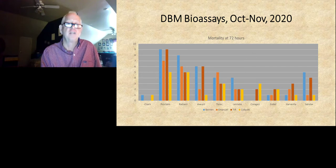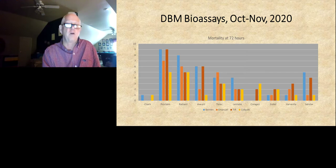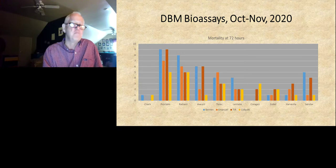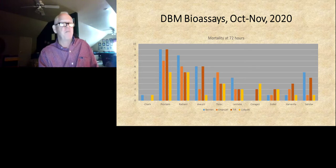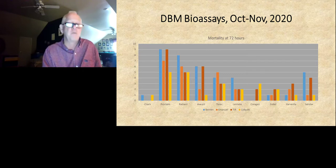We also looked at Sinstar simply because it's a new product and the question came up as to whether it would have efficacy on diamondback moth. It's probably not going to look great in this kind of bioassay anyway because of its mode of action. Most of the work we've done indicates it may have some activity on diamondback, but it's not going to be a diamondback-type product. It might be that if you're spraying for whiteflies or aphids you get some activity on diamondback, but it's not a product you would select specifically for diamondback.